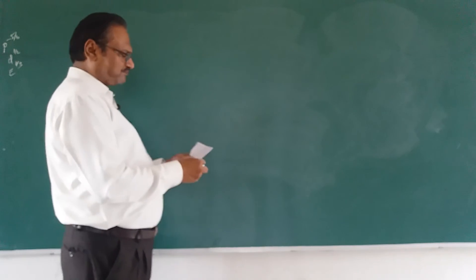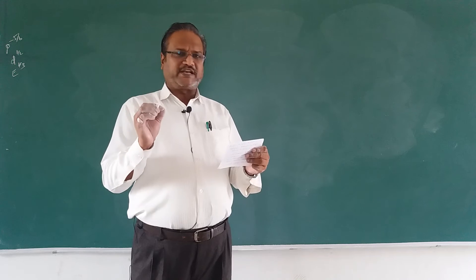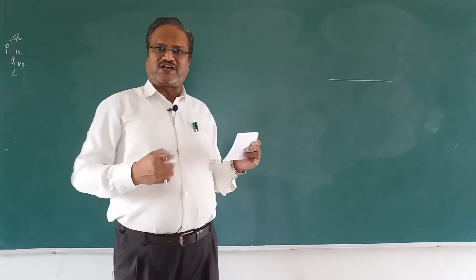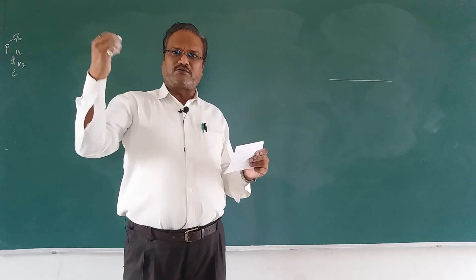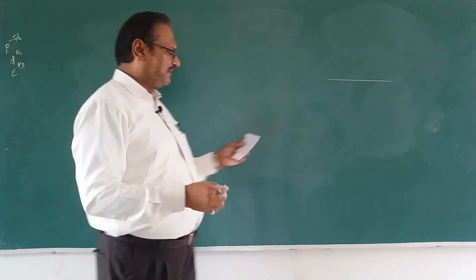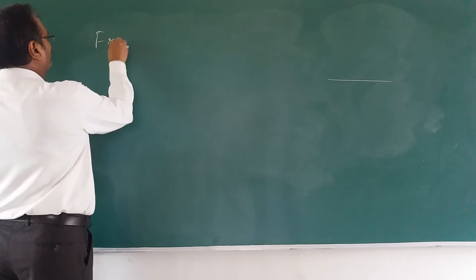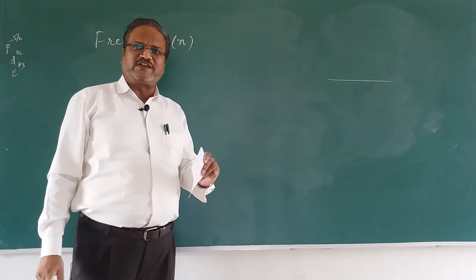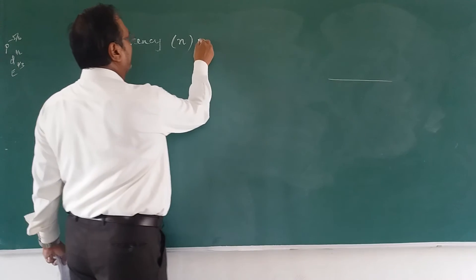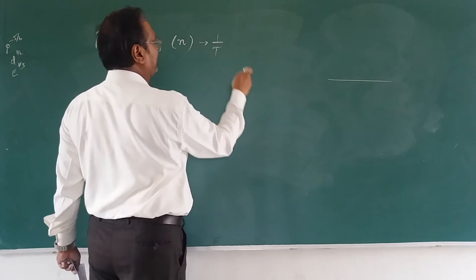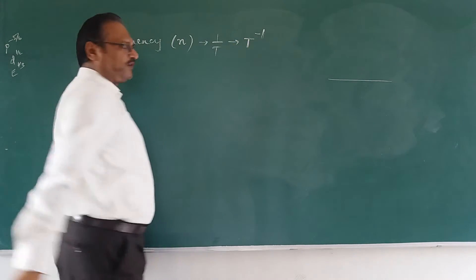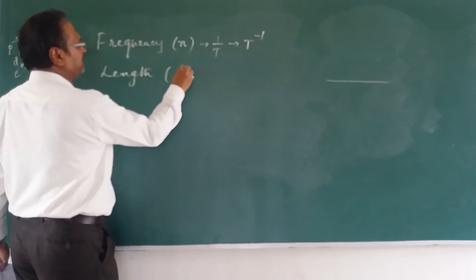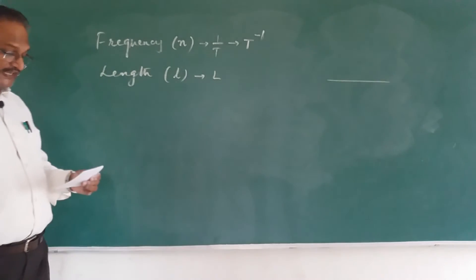Now the second problem: the frequency of vibration of a stretched string - like a violin, guitar, sitar, or veena. The frequency n (or f) depends on the length of the string L, the mass per unit length m (dimensional formula M L power minus 1), and the tension T in the string (which is a force: M L T power minus 2).